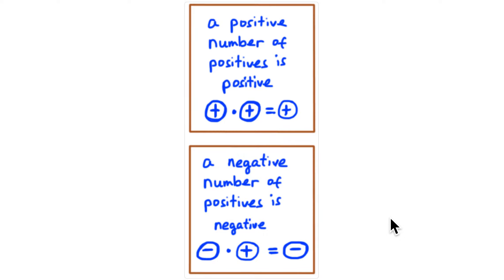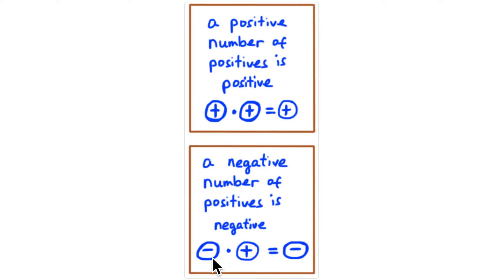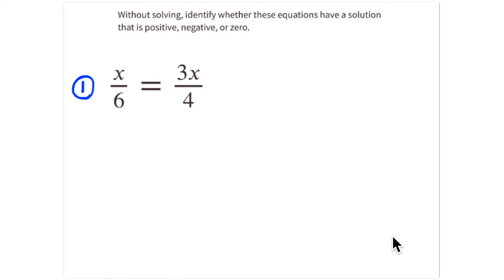I'll use two key phrases as we look at the solutions to these equations: a positive number of positives is positive, and a negative number of positives is negative.